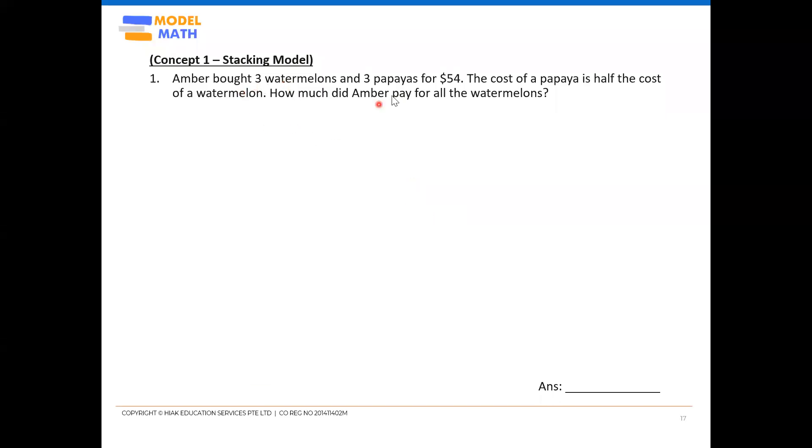Ember bought three watermelons and three papayas for $54. The cost of a papaya is half the cost of a watermelon. How much did Ember pay for all the watermelons?